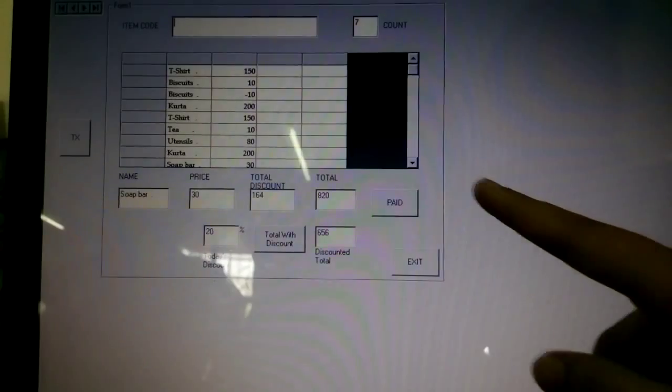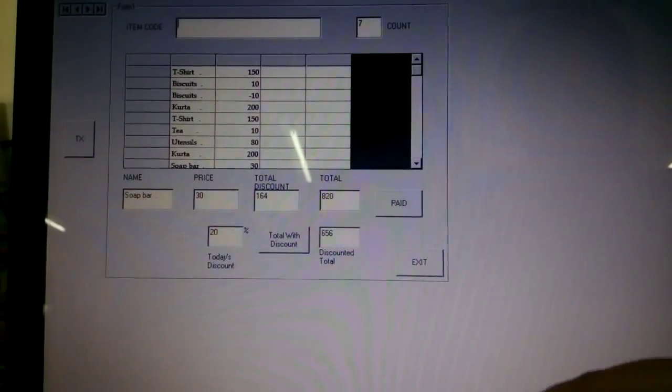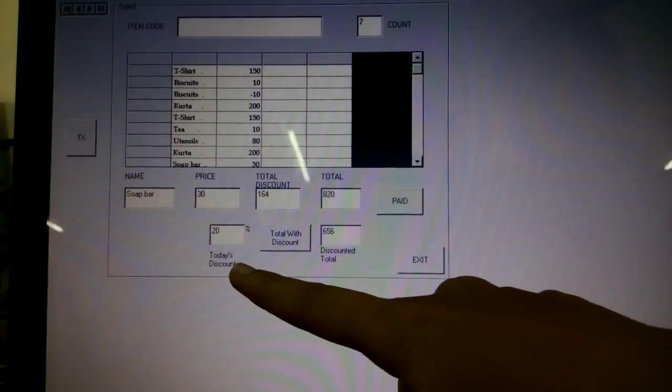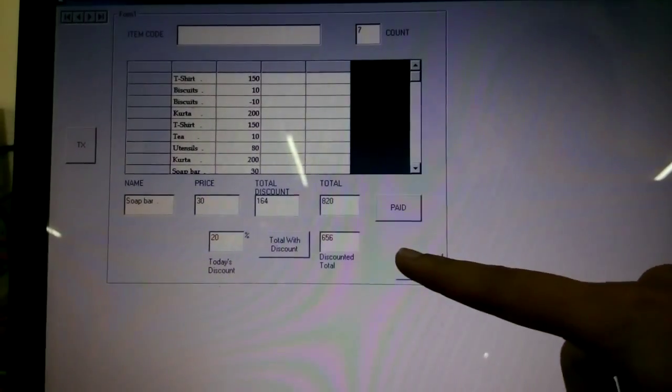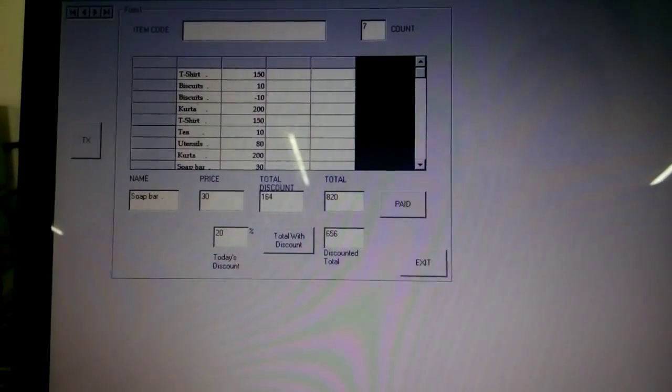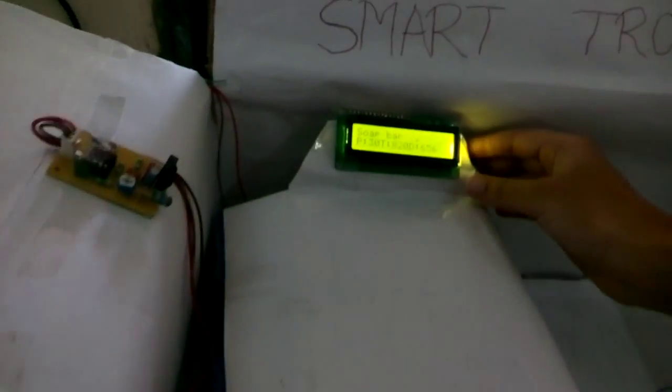Now as shown here the total is 820. So the discount automatically changes to 20%. The discounted price is 656. The same data is transferred to the LCD as shown here.